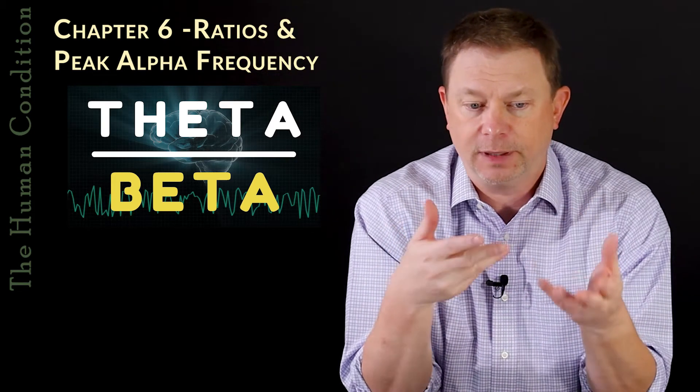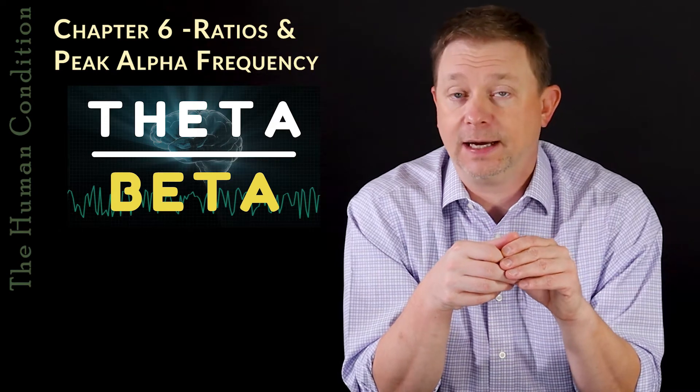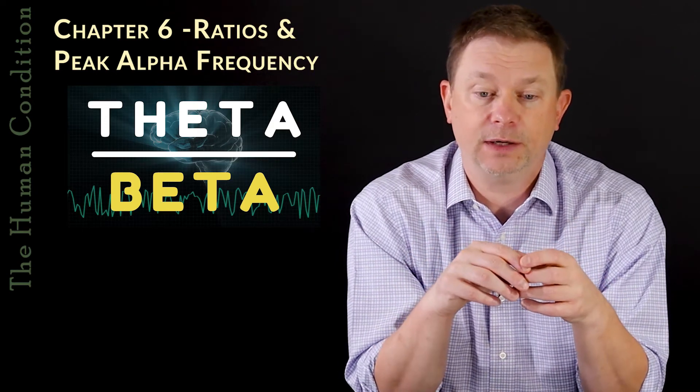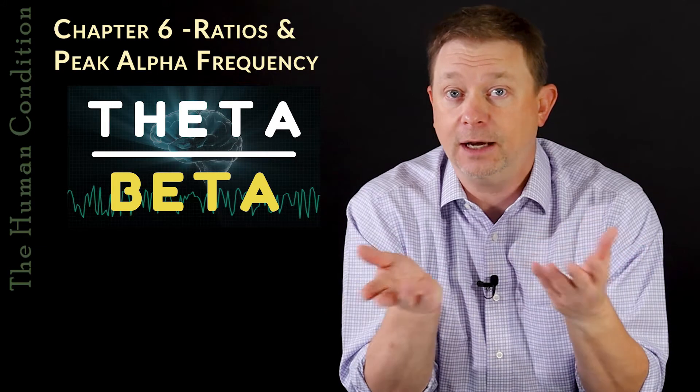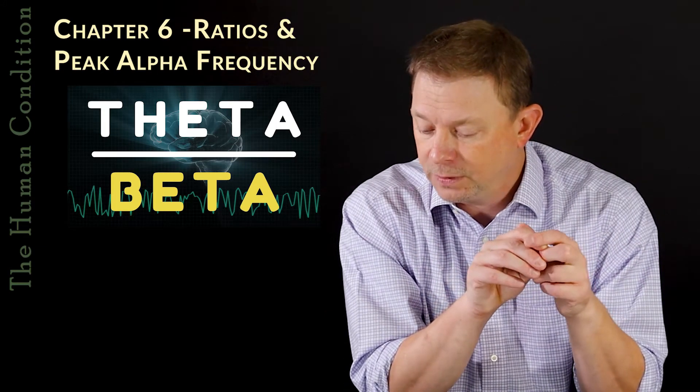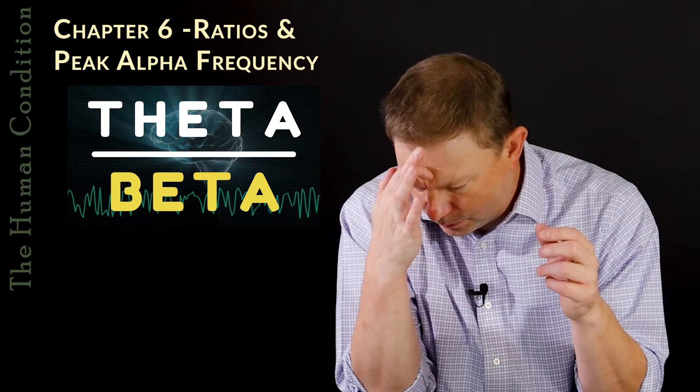When they're at rest, there should be a certain amount of brain waves. When they're doing a task, there should be a certain different amount of brain waves. When their eyes are closed versus open, there's a difference in alpha waves and beta waves. So all of that is what we look at.